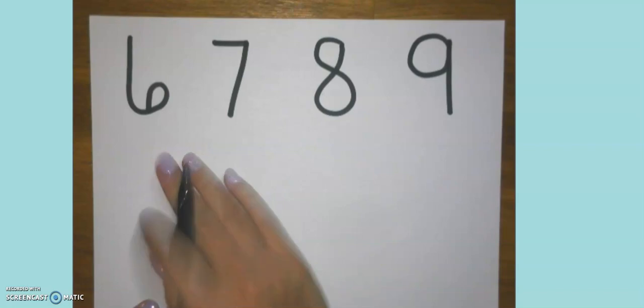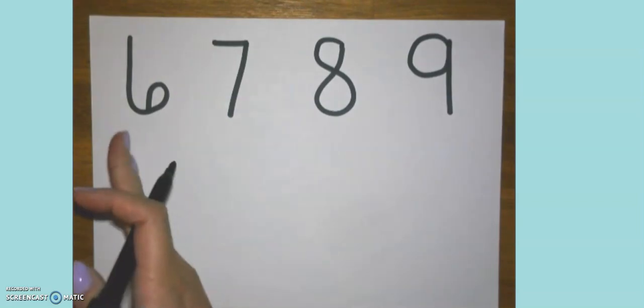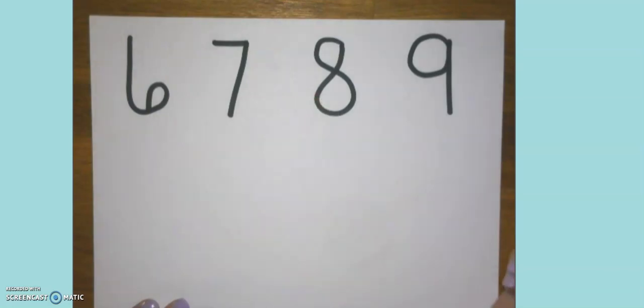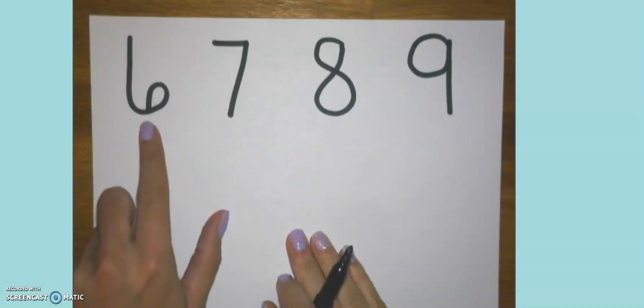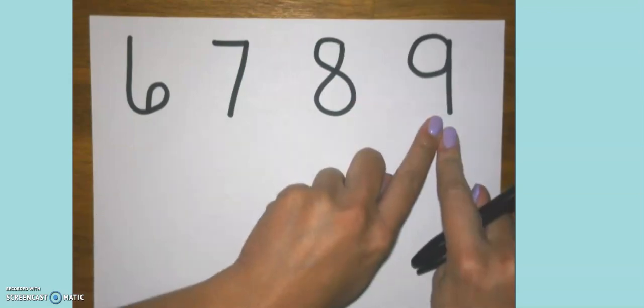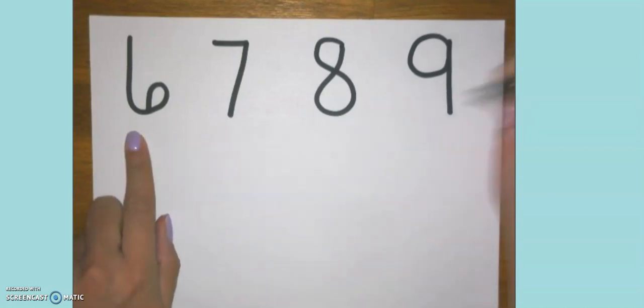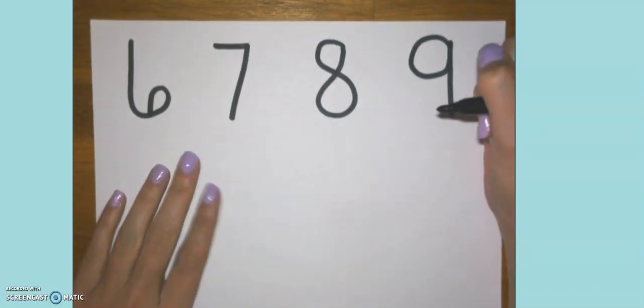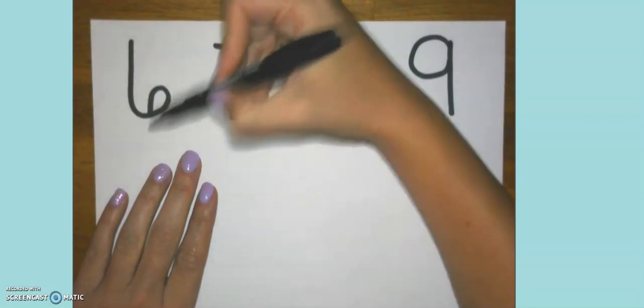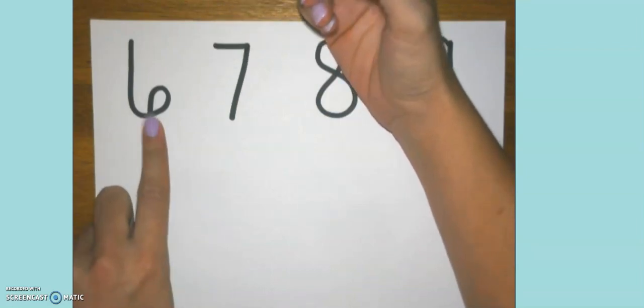Now if you remember from the first video every number gets the same amount of touch points as its number. So six will get six touch points, seven gets seven, eight gets eight, and nine gets nine. Now you might be saying this number is basically just going to be full of touch points. But the reason that these numbers are a little bit trickier is because six, seven, eight, and nine all have what I like to call double touch points. So instead of tapping my pencil one time, we're actually going to tap one, two, two times with our pencil.